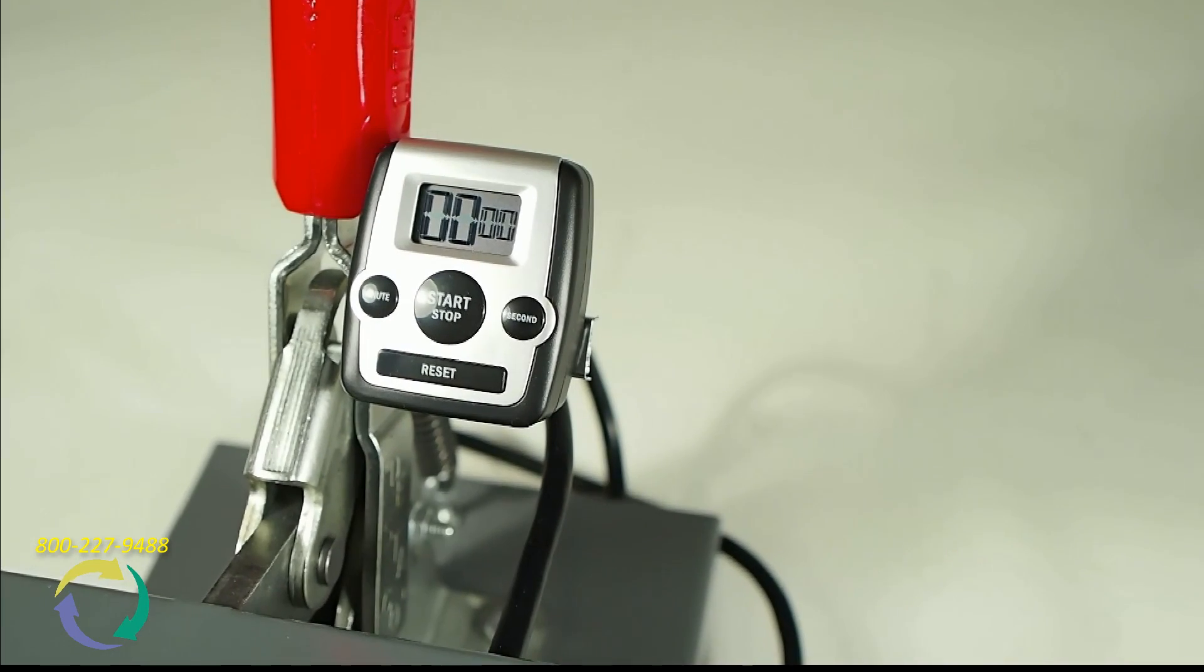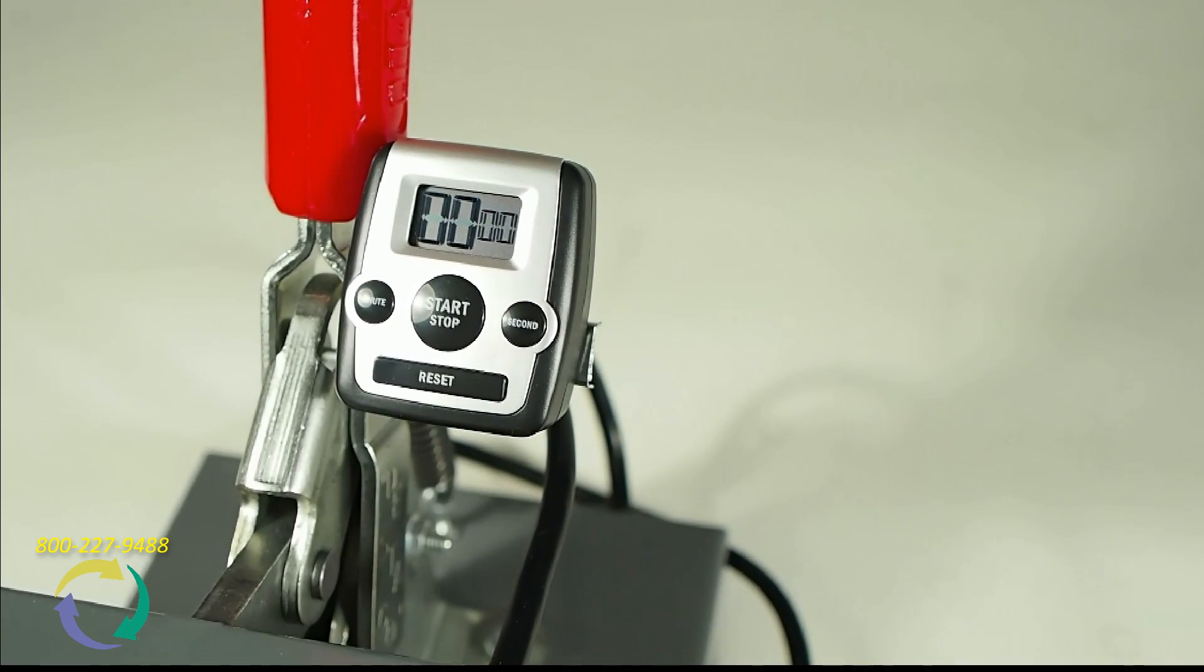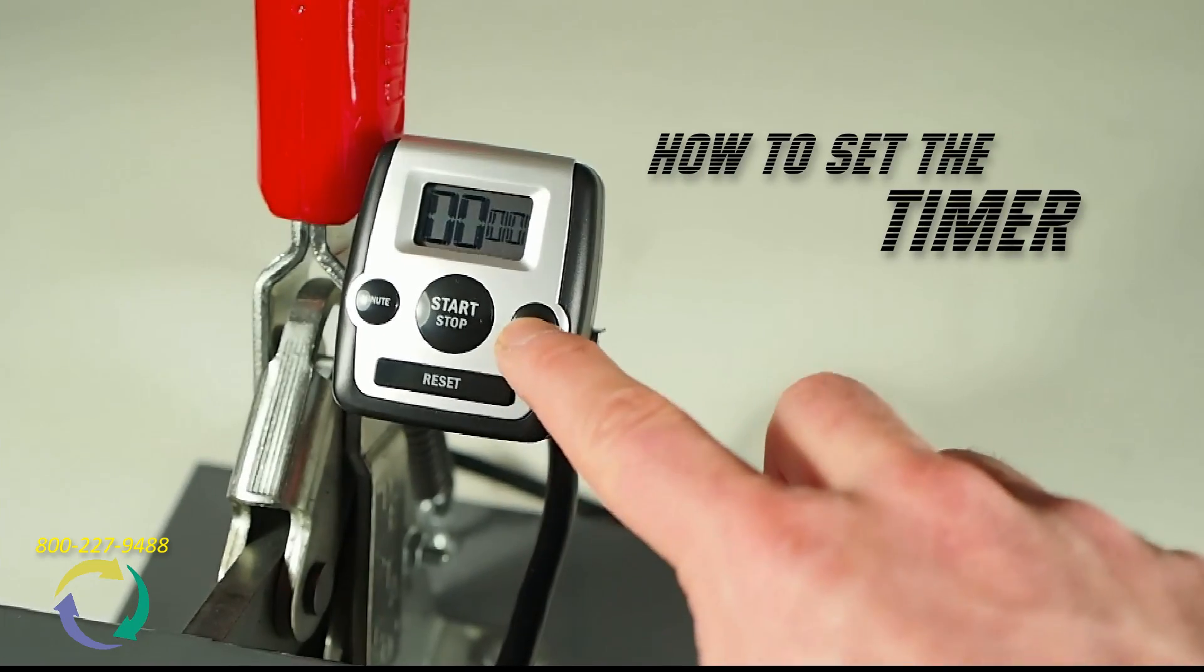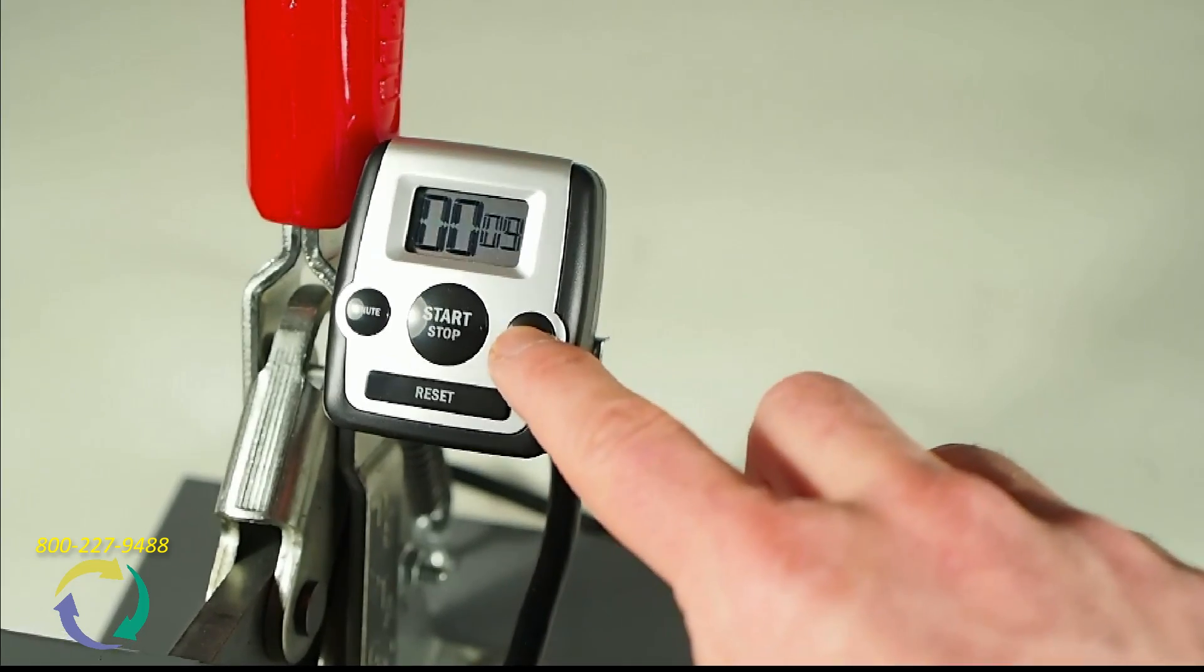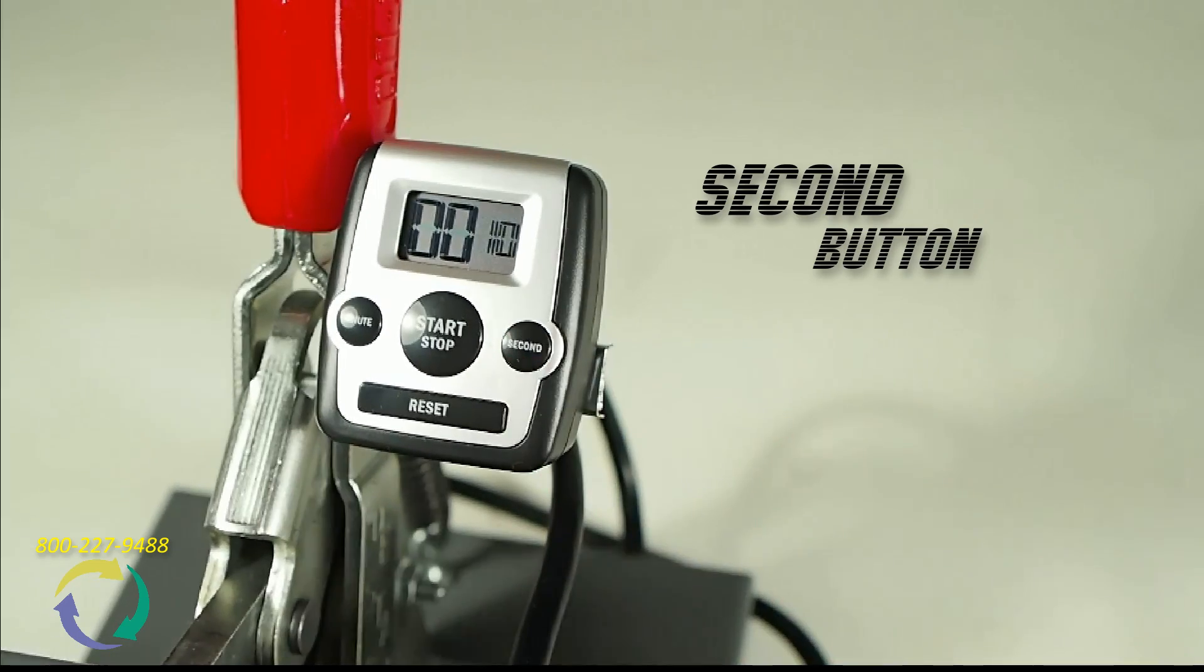To show how easy it is to operate the S46, let's apply a garment label and then a repair patch. Before applying one of our Unimark garment labels, set the digital timer to 10 seconds. Just press the second button until you reach 10.